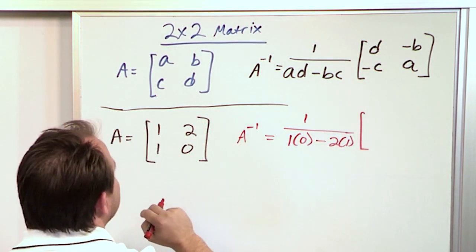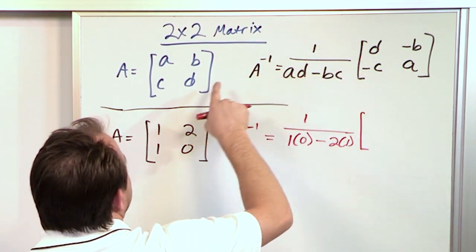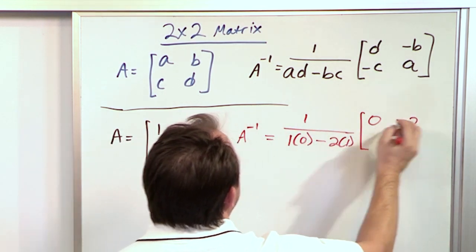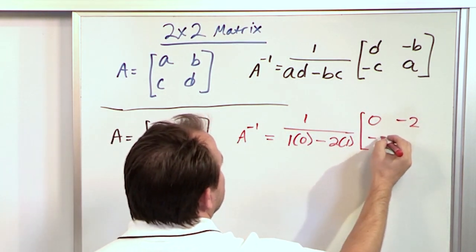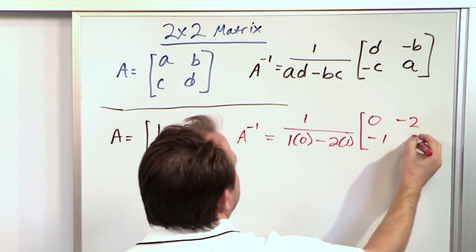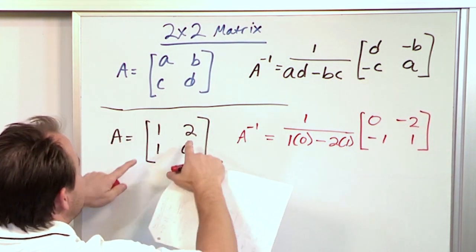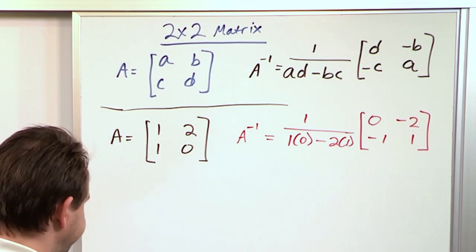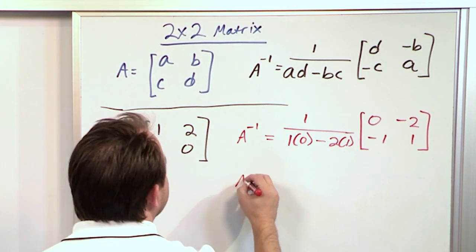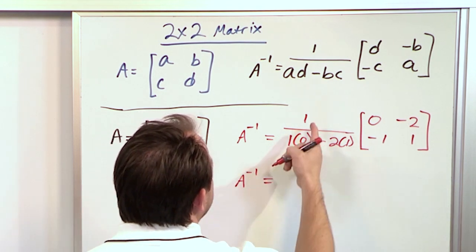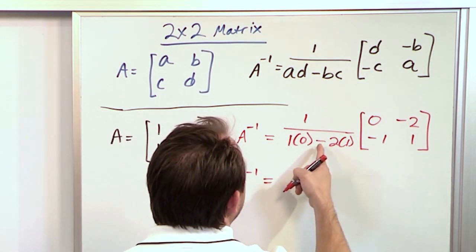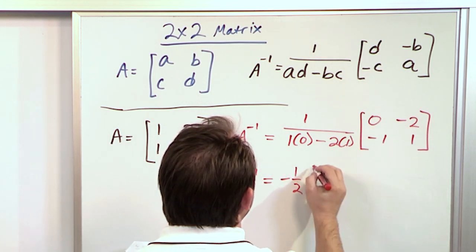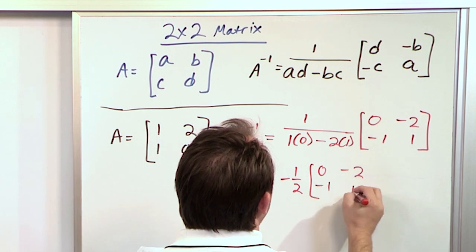We're multiplying by the matrix where D goes here — D is 0; negative B, which means negative 2; negative C, which means negative 1; and A, which is 1. So we stick negatives on the off-diagonal elements and switch the diagonal. This inverse becomes one over zero minus two, which is negative one half, times the matrix 0, negative 2, negative 1, 1.